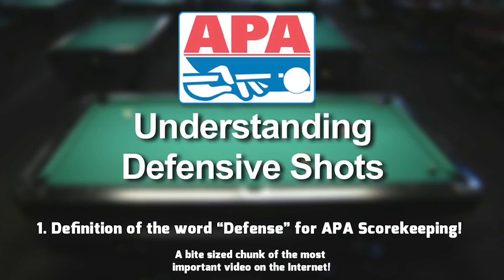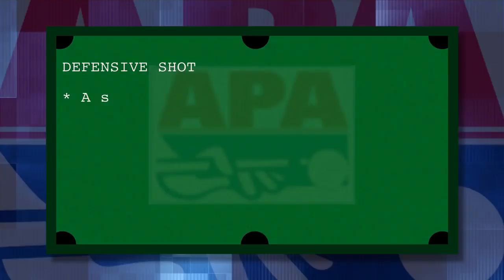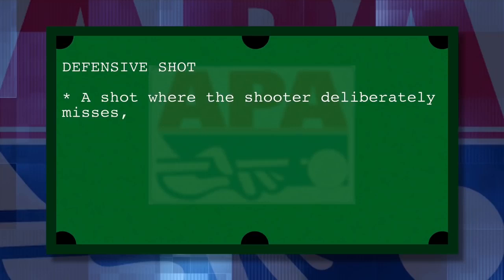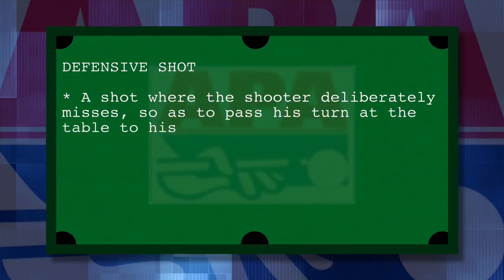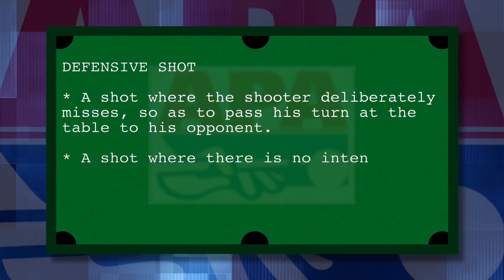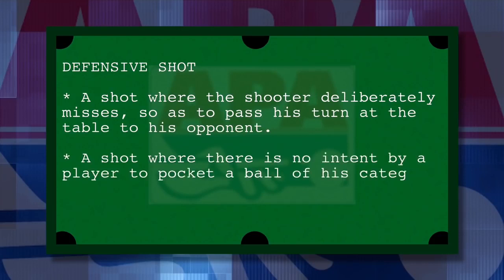The APA Official Team Manual defines a defensive shot as a shot where the shooter deliberately misses so as to pass his turn at the table to his opponent. Simply stated, a defensive shot is a shot where there is no intent by a player to pocket a ball of his category. Intent is the key word.